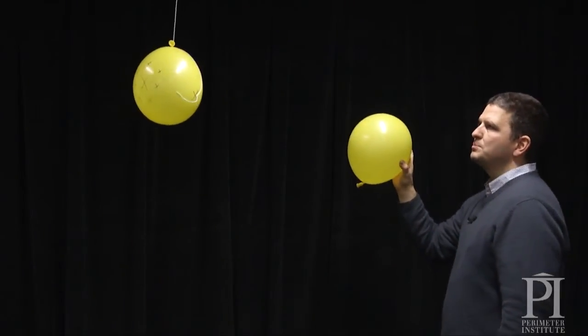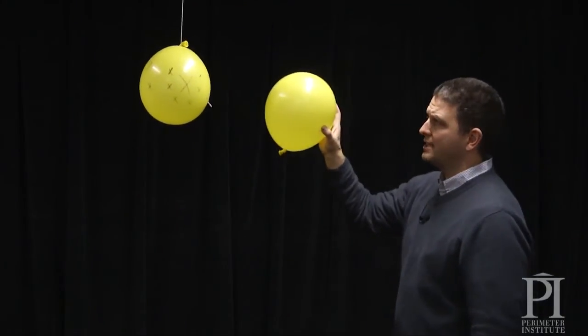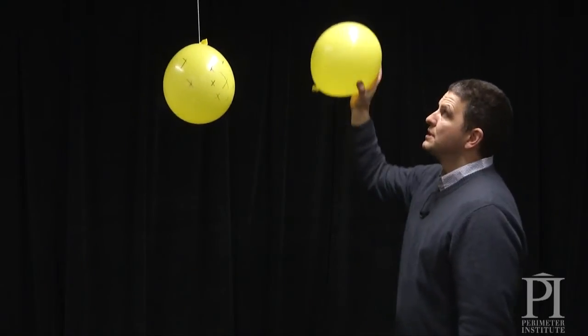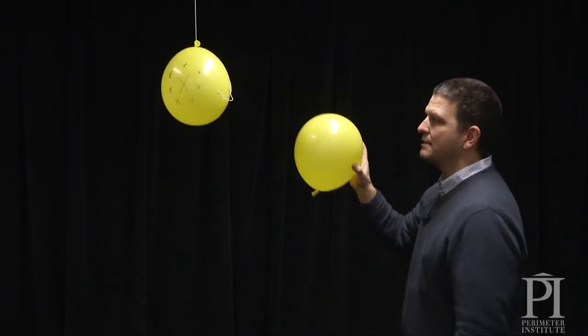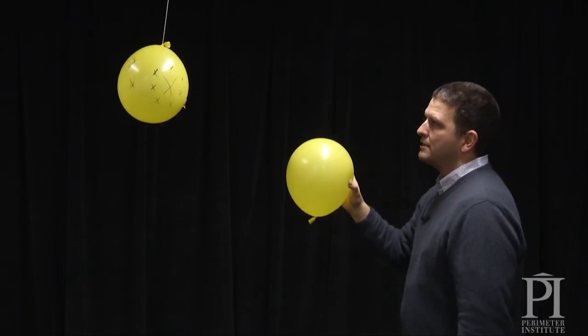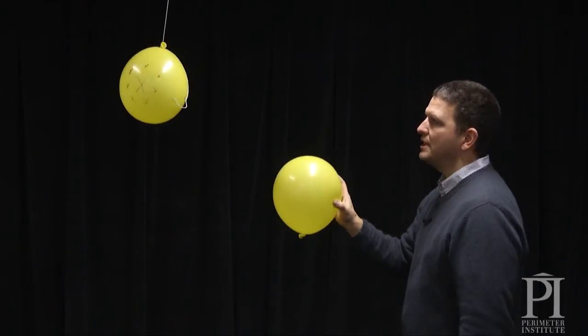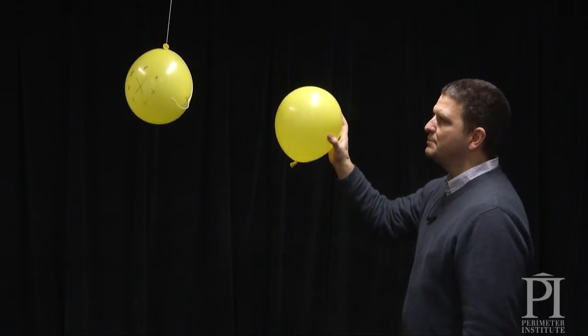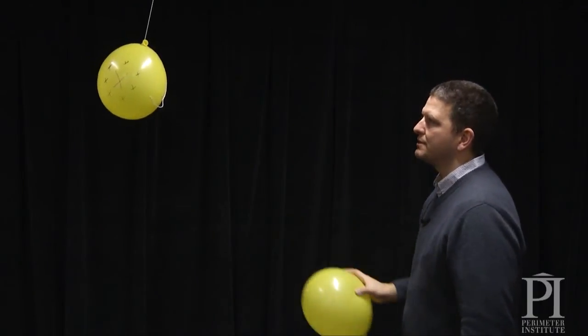You can actually have the students play around with different variables in terms of what's going to create the largest deflection from vertical. Does the length of the string matter? Does the amount of charge matter? Does the speed of the incoming particle matter? Let the students play with it and let them discover for themselves what are the important variables in this simple demonstration of electrostatic repulsion that is the basis of Rutherford scattering.